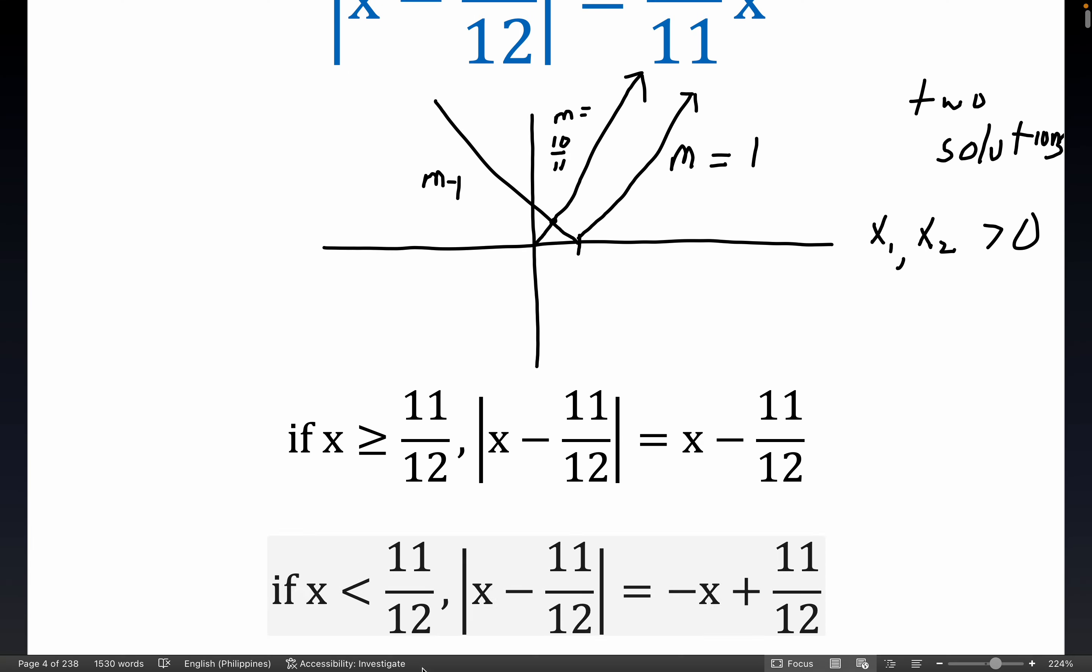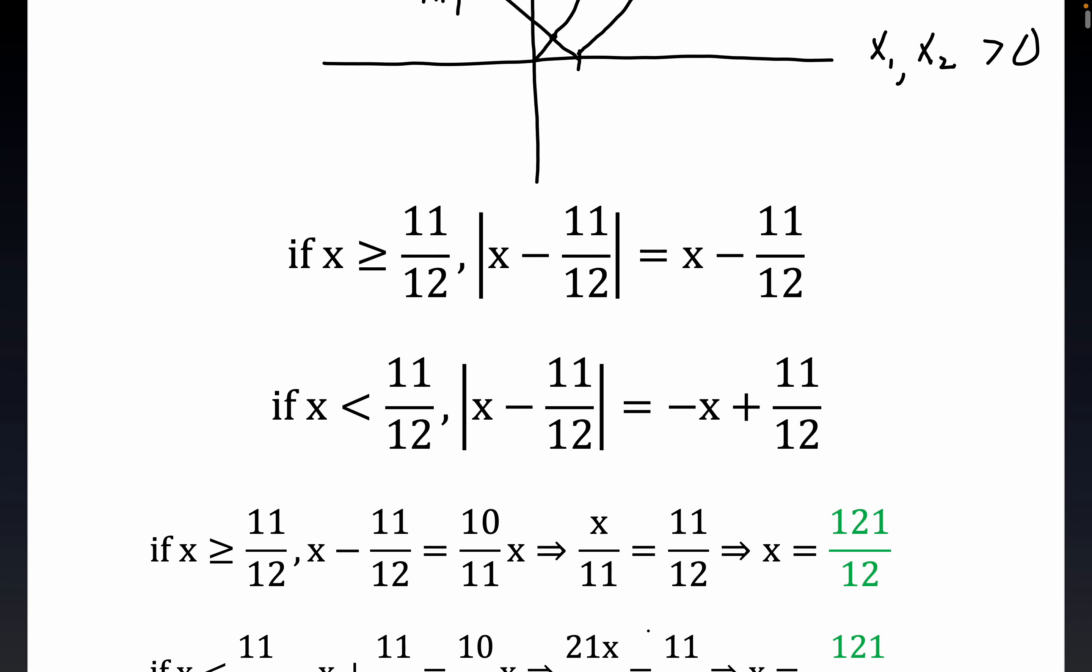In a similar fashion, if you're to the left of 11 twelfths, which would be up here somewhere, the absolute value of the input would be minus the input, which is just flipping these signs. And so we just carry on.